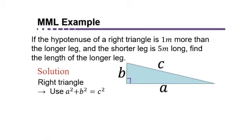They're telling us the hypotenuse is one meter more than the longer leg. The longer leg in this case being a. So let's call the side a, x. And they told us the shorter leg is five, so b is five.